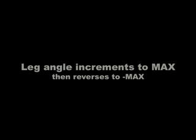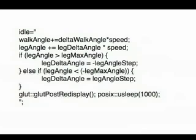Examine the following code which implements the trotting, and you'll see that the leg angle increments to a maximum rotation and then reverses by a step to go to a negative maximum. We do the glutPostRedisplay to cause the pony polygon to be rendered again, which gives the appearance of walking.